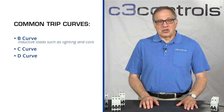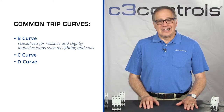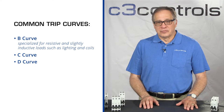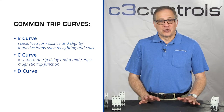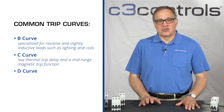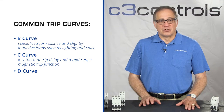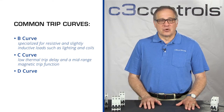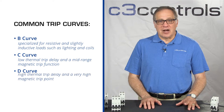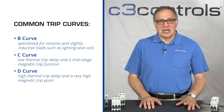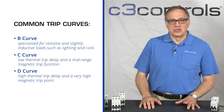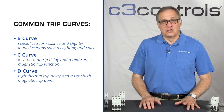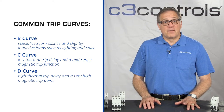B curves are specialized for resistive and slightly inductive loads such as lighting and coils. C curves have a low thermal trip delay and a mid-range magnetic trip function to protect against low inrush current motors, resistive loads, and control circuits. D curves have a high thermal trip delay and a very high magnetic trip point to protect high inrush current motors, heaters, transformers, and inductive loads while preventing a false trip.